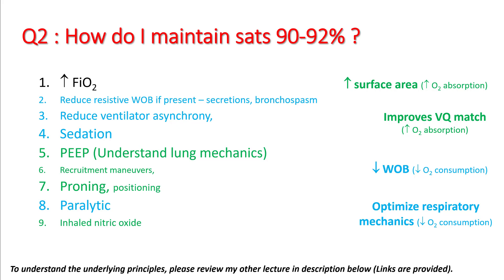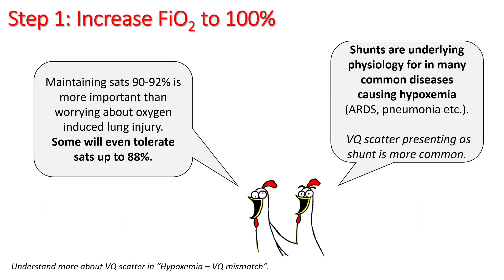If you are unable to achieve oxygenation by any of these means, you have to look for VV ECMO. Maintaining SATs 90 to 92 percent is more important than worrying about oxygen-induced lung injury, so increase your FiO2 to 100 percent. The usual target is SATs 90 to 92 percent, though some doctors will even tolerate SATs up to 88 percent. SATs below 88 percent have not been studied very well in the literature.